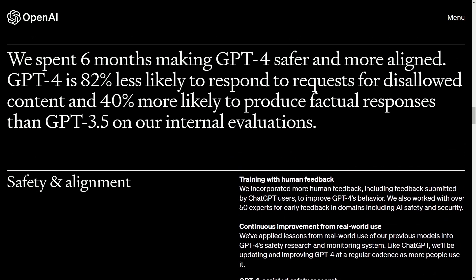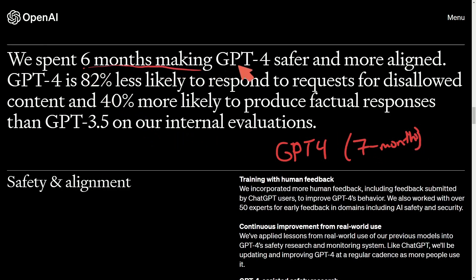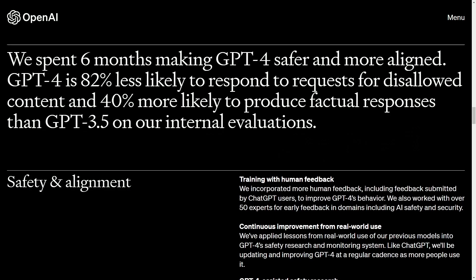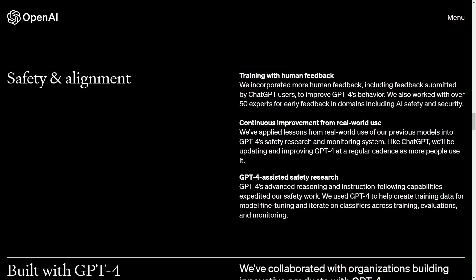Interestingly, chat GPT-4 is not brand new — it has existed for seven months. They spent six of those months making GPT-4 safe and more aligned. GPT-4 is 82% less likely to respond to requests for disallowed content and 40% more likely to produce factual responses than GPT-3.5 in internal evaluations. They've been heavily focused on safety and alignment over the last half year.